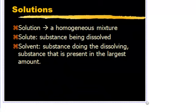Solutions, if you remember from the first semester, are homogeneous mixtures. We looked at two types of mixtures: homogeneous mixtures and heterogeneous mixtures. A homogeneous mixture is a mixture where it's the same throughout. Homogeneous mixtures contain two parts: the solute, which is the substance being dissolved in the solution, and the solvent, the substance doing the dissolving, the substance present in the largest amount.